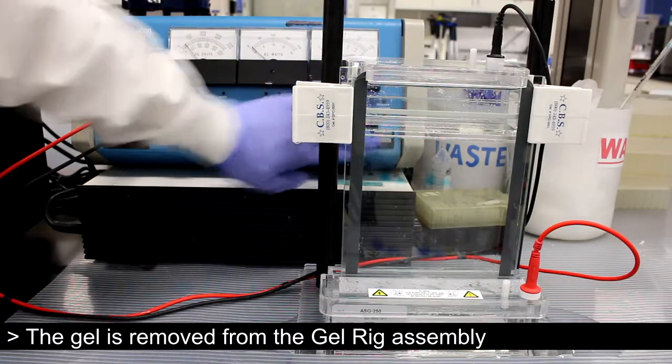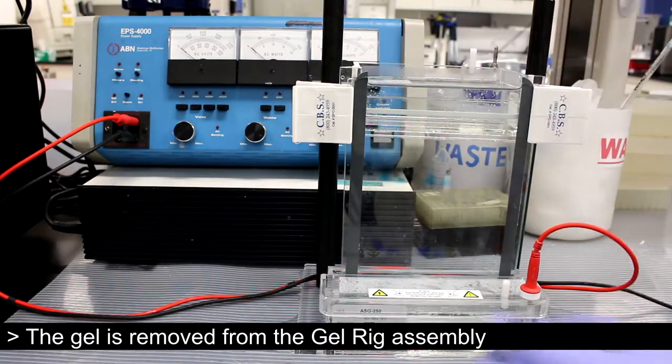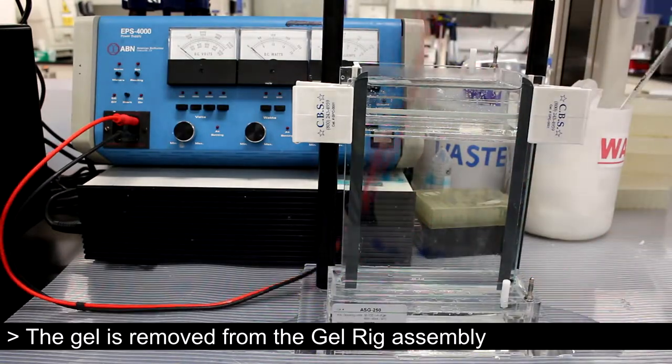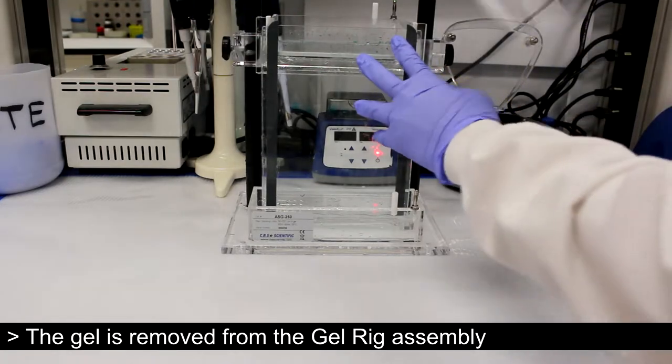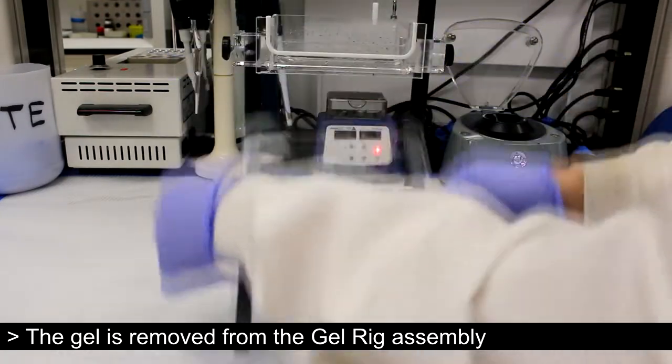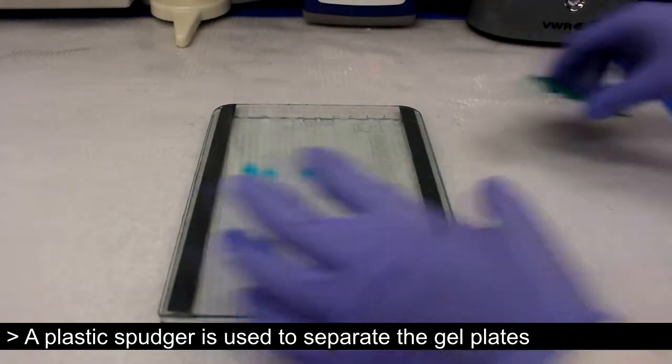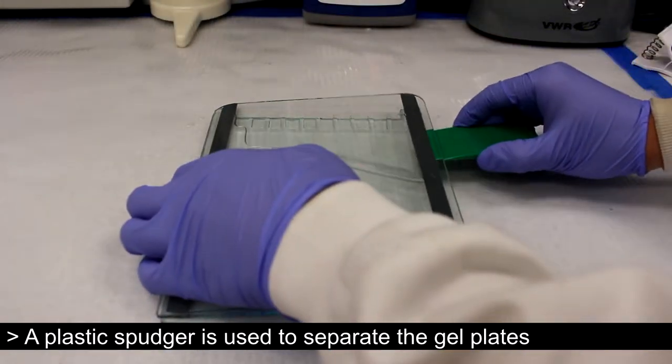After sufficient separation, the gel can be removed from the gel rig assembly. The gel plates can be separated using a plastic spudger.